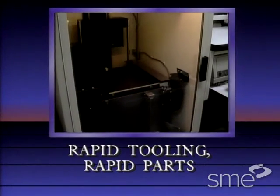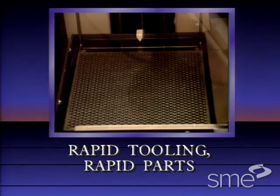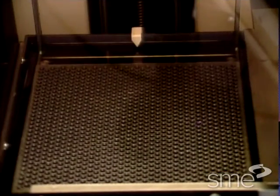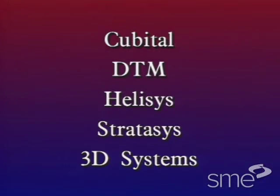Rapid prototyping systems have been available since the late 1980s, when 3D Systems of Valencia, California introduced the first stereolithography machines. Today, five of these systems continue to account for over 90 percent of commercial use in the U.S.